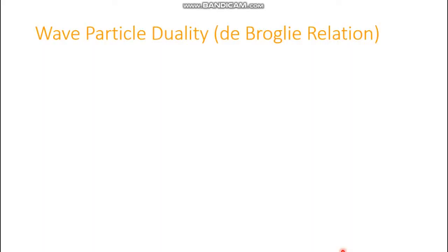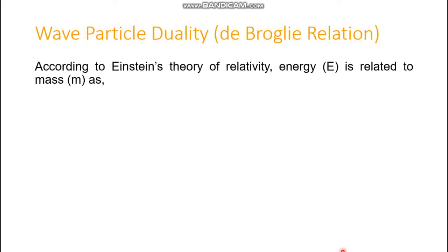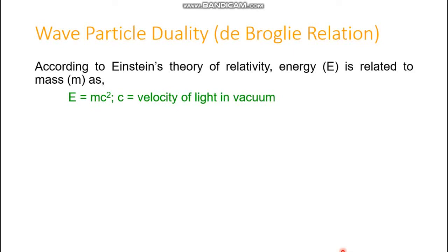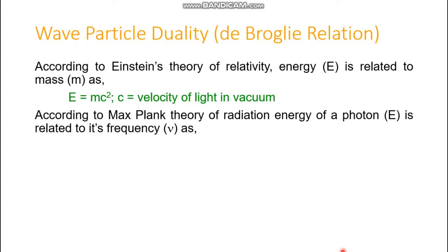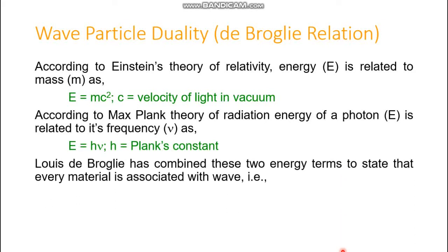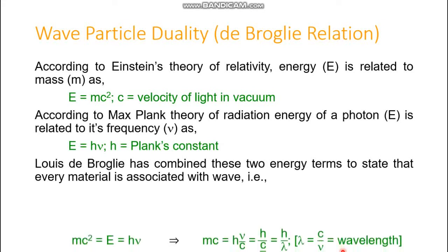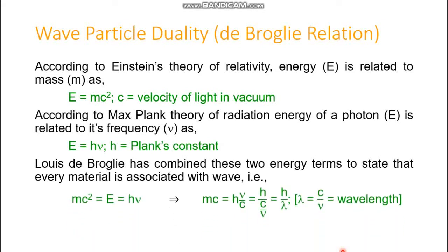Let's start with wave-particle duality, that is the de Broglie relation. According to Einstein's theory of relativity, energy E is related to mass m as the world-renowned equation E = mc², where c is the velocity of light in vacuum. According to Max Planck's theory of radiation, the energy of a photon is related to its frequency ν as E = hν, where h is Planck's constant. Louis de Broglie combined these two energy terms to state that every material is associated with a wave: mc² = E = hν.